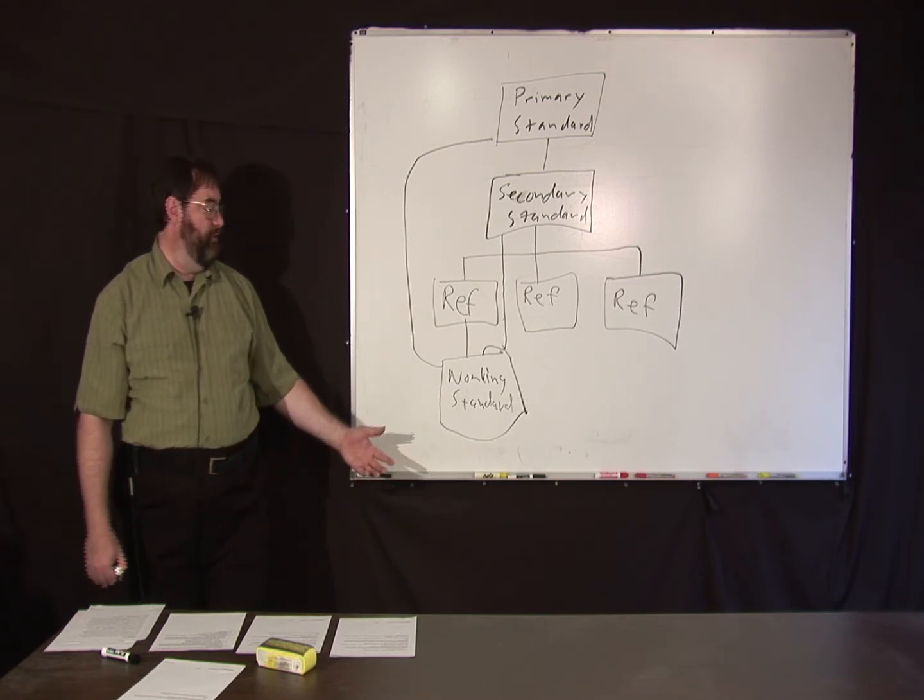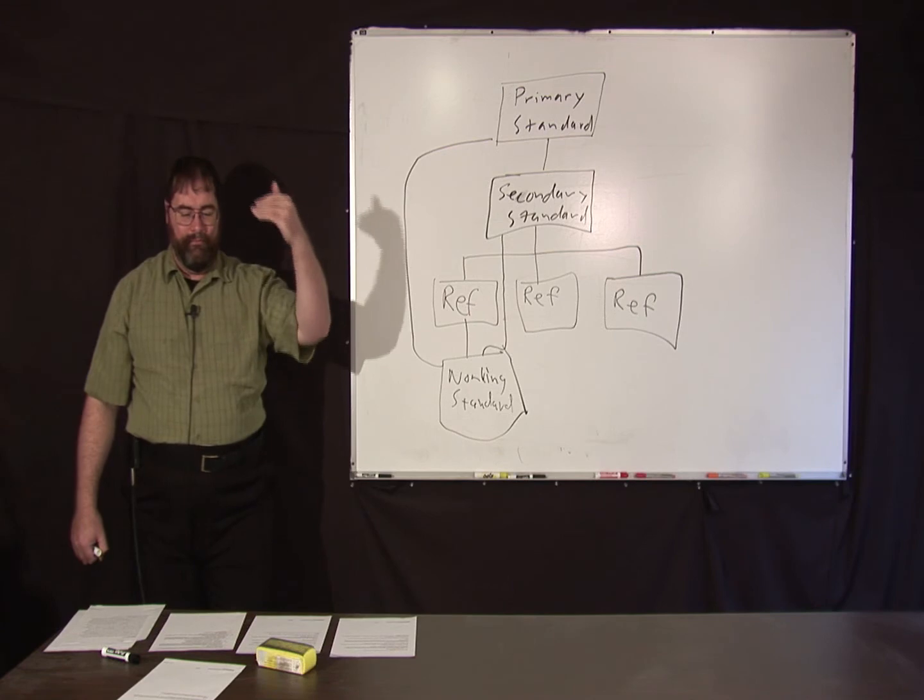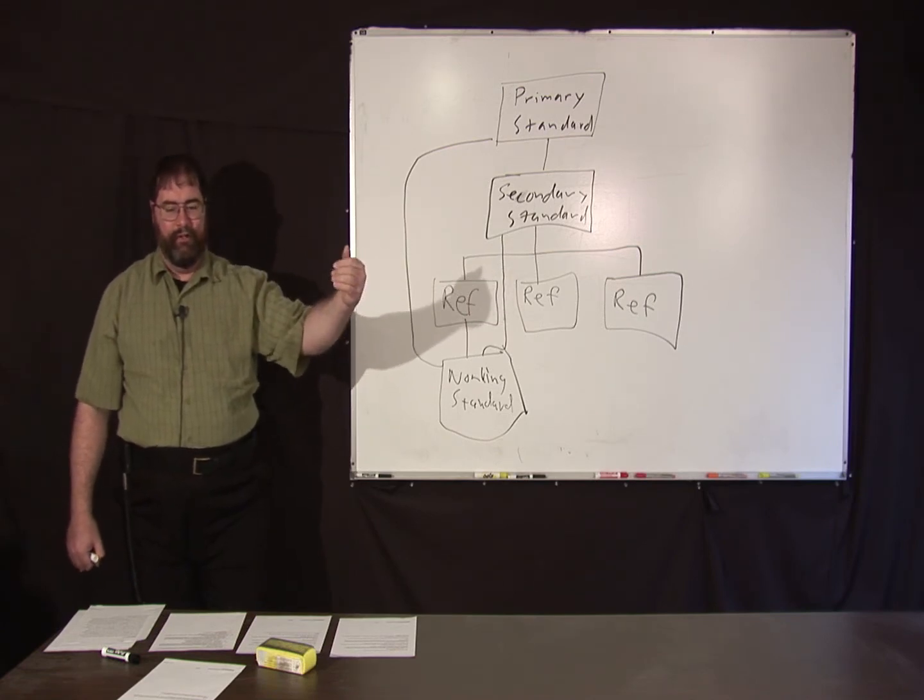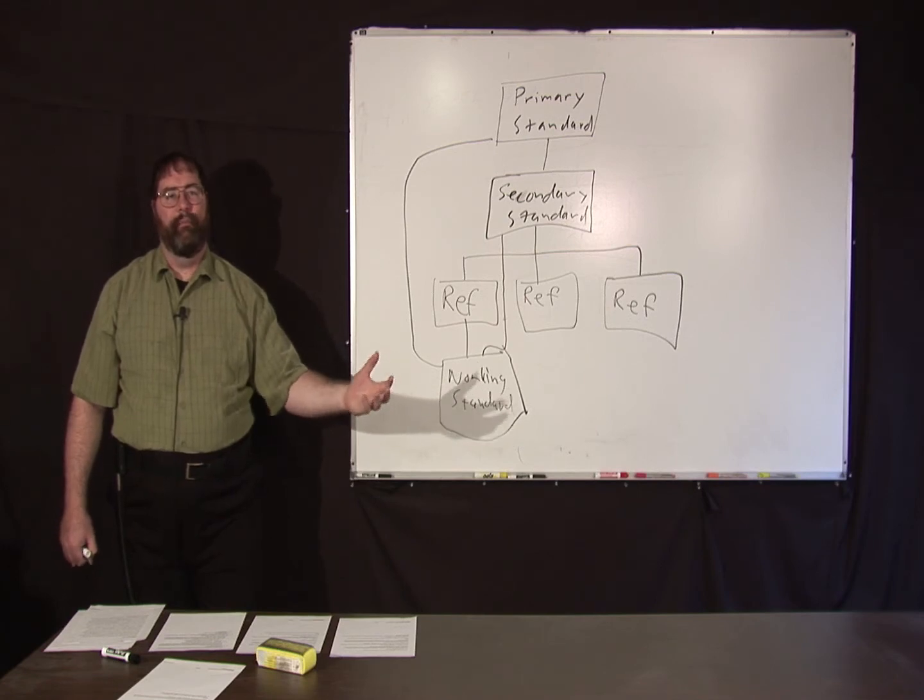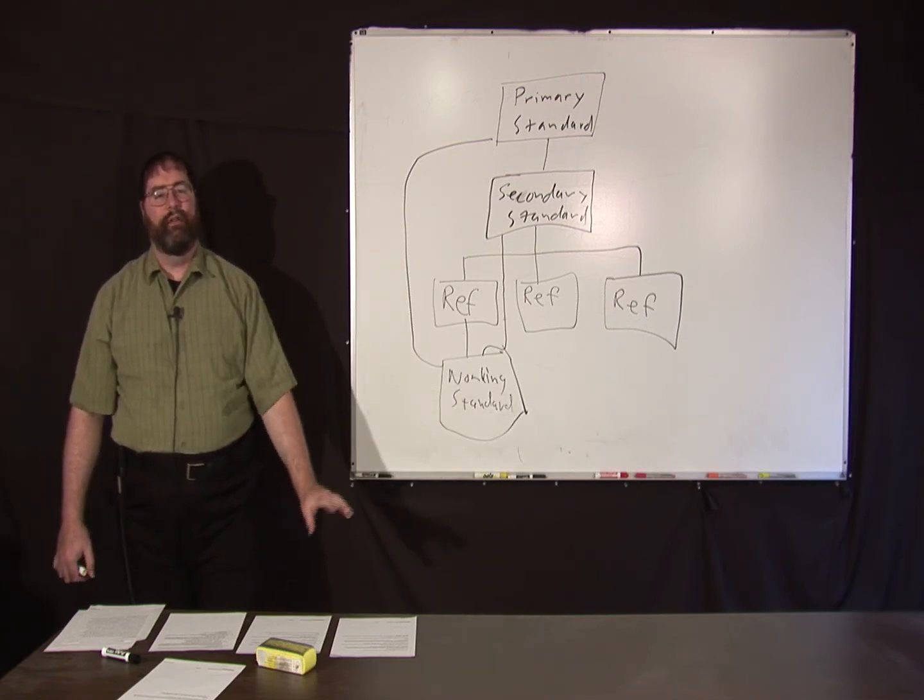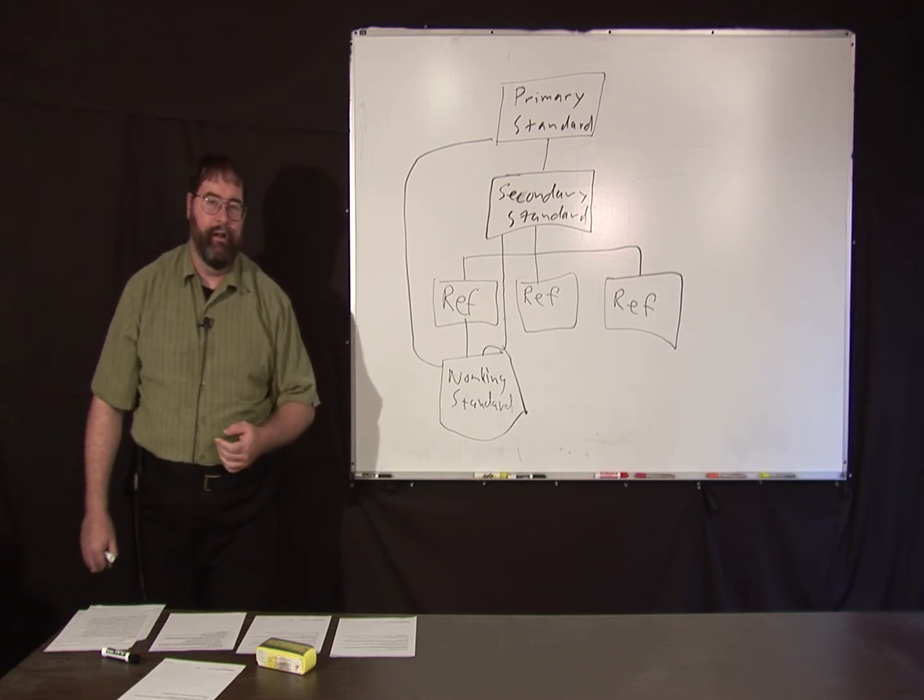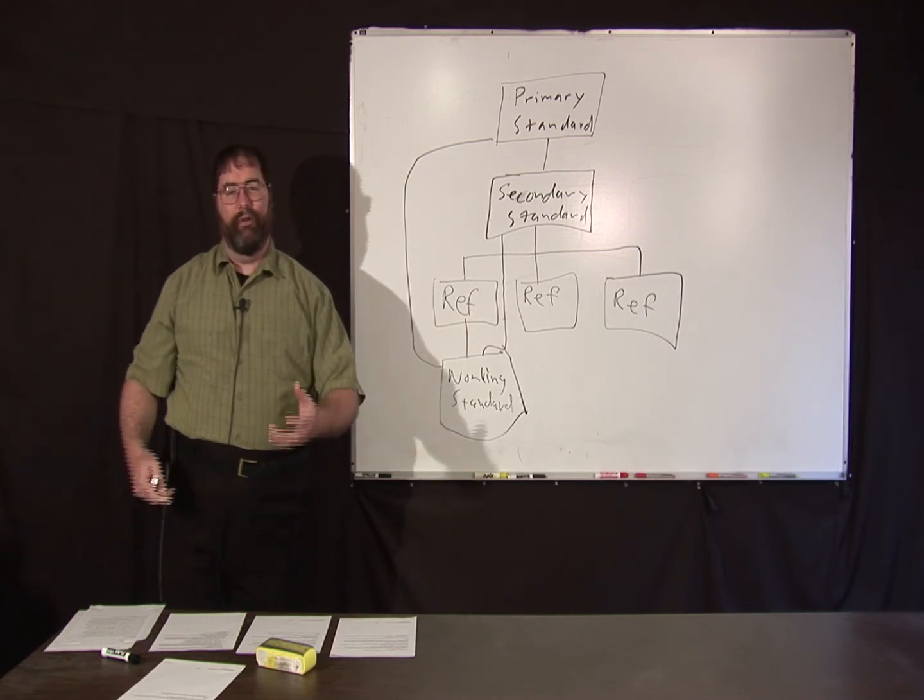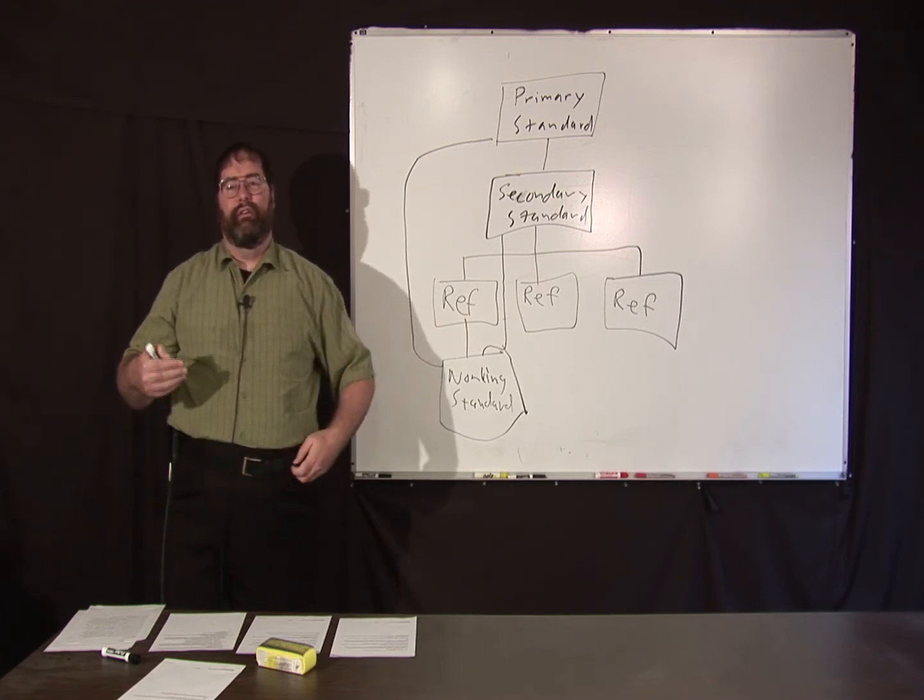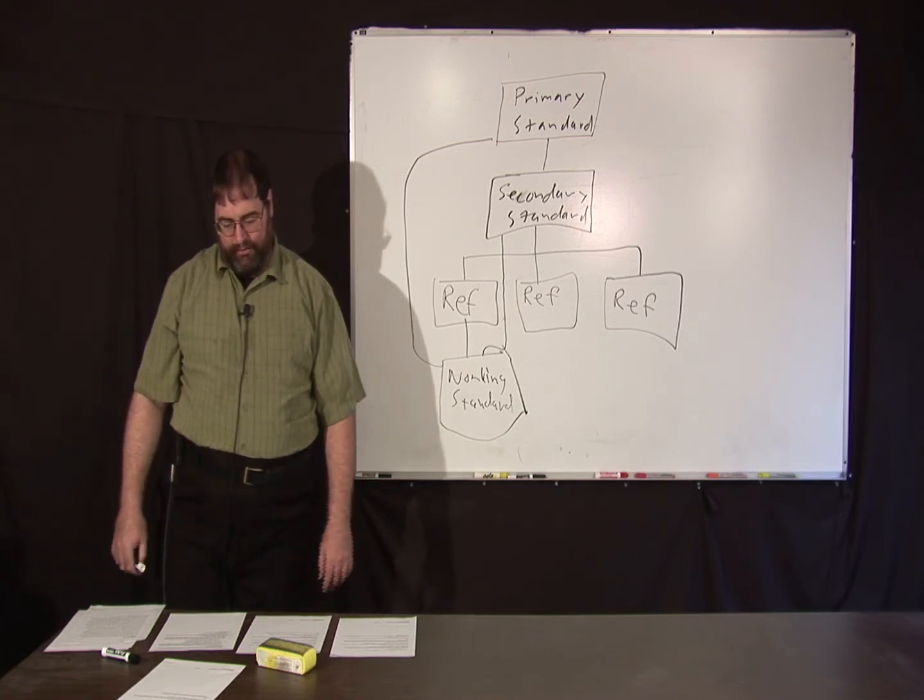So, for instance, your bathroom scale. You start out with the BIPM, national standards, go down to standards calibrated at a company. Finally, some sort of process at the end is used to check the calibration of the bathroom scale you buy at the store. So, that would be a traceable measurement, if you had the documentation, to prove that at each step of the way there was an unbroken chain of intercomparisons.